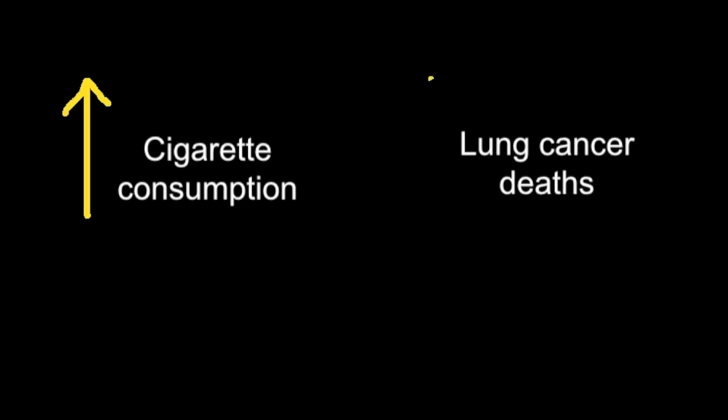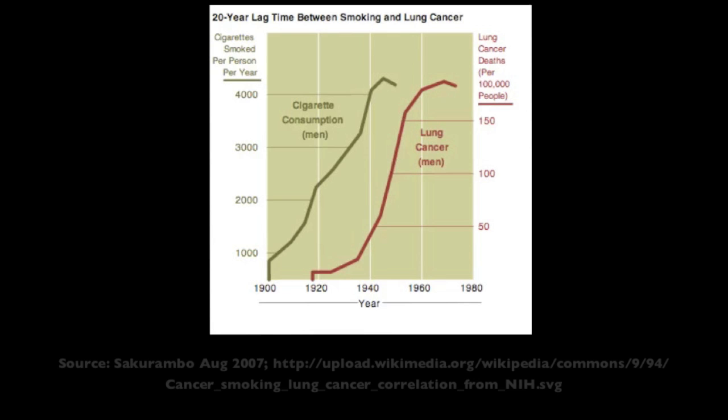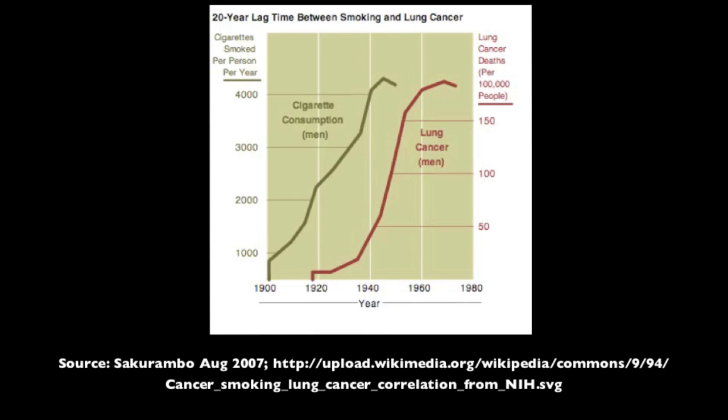Now if we take an example of two variables — say cigarette consumption and lung cancer deaths — it is possible to identify a correlation without doing an experiment, just simply from observations of cigarette consumption and lung cancer deaths. These observations have shown a high positive correlation.